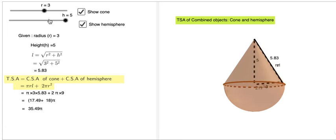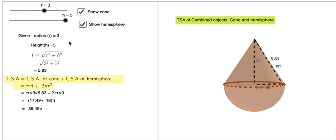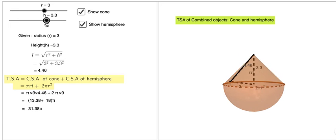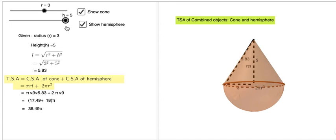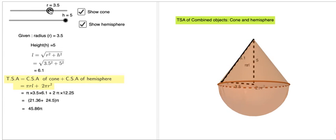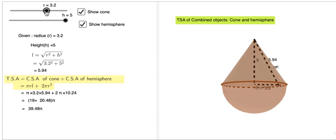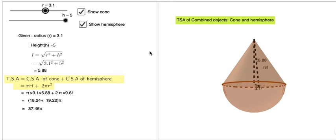You can substitute the values of r and h to find out the total surface area. You can increase or decrease the height of the cone and increase or decrease the radius of the object. The radius is shared by both the cone and the hemisphere.